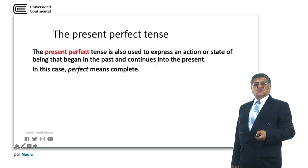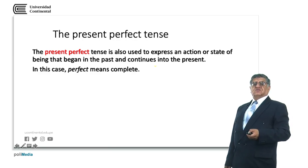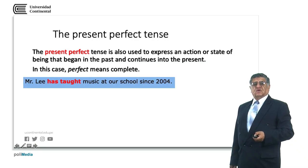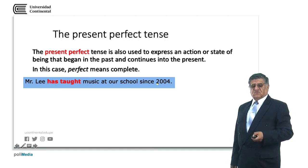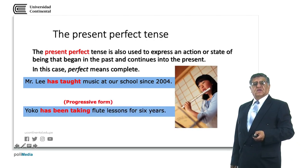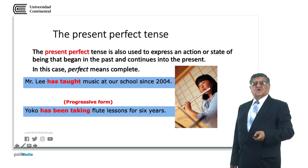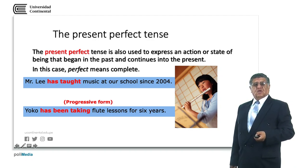The present perfect tense is also used to express an action or state of being that began in the past and continues. Perfect means complete — that is why it is called the present perfect, or the complete present. For example: Mr. Rui has taught music at our school since 2004 — an action that started in 2004 and continues. Yoko has been taking flute lessons for six years — the present perfect progressive, or present perfect continuous.